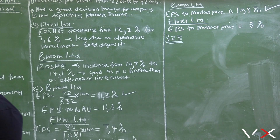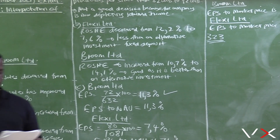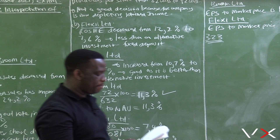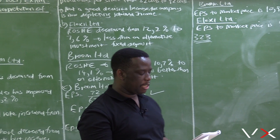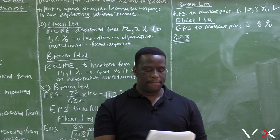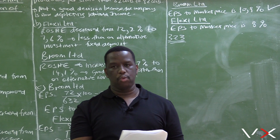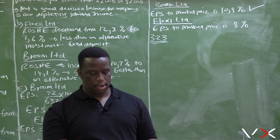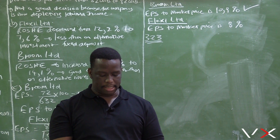Question 3.2.3 asks about the shareholding of Bob Yates in both companies, and to comment on the price paid for the shares repurchased by Flexi Ltd. We need to provide two points commenting on the price paid.